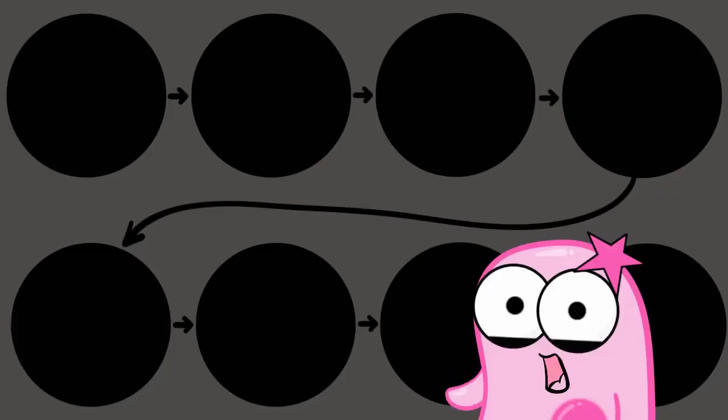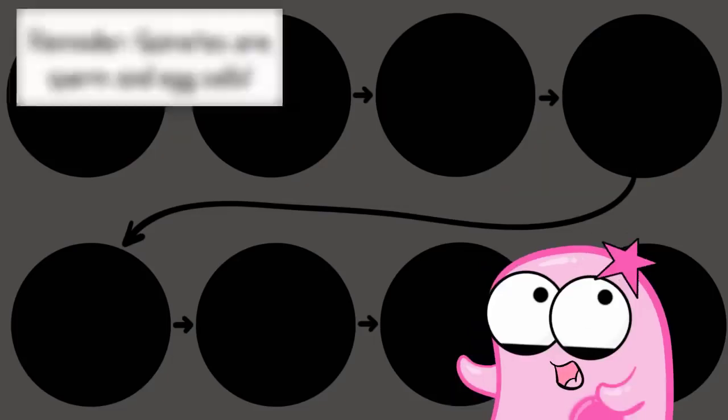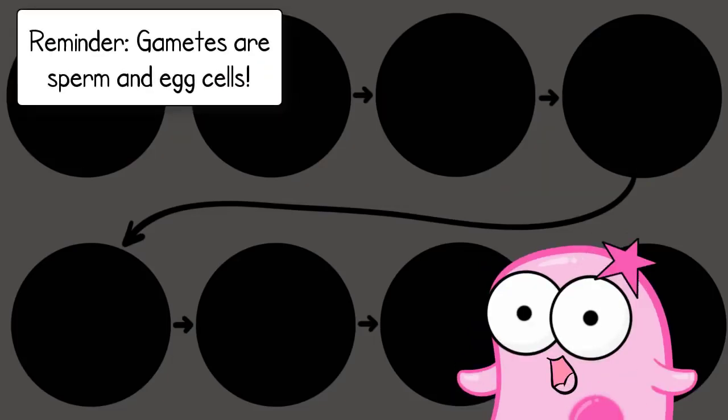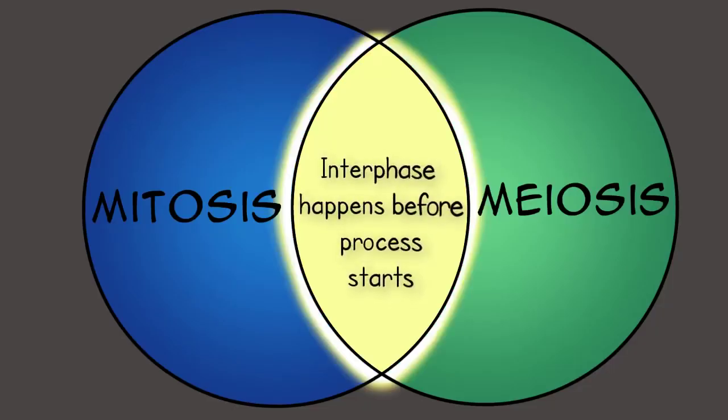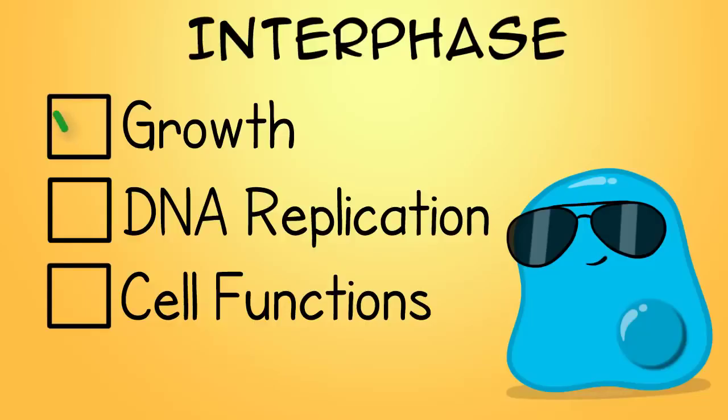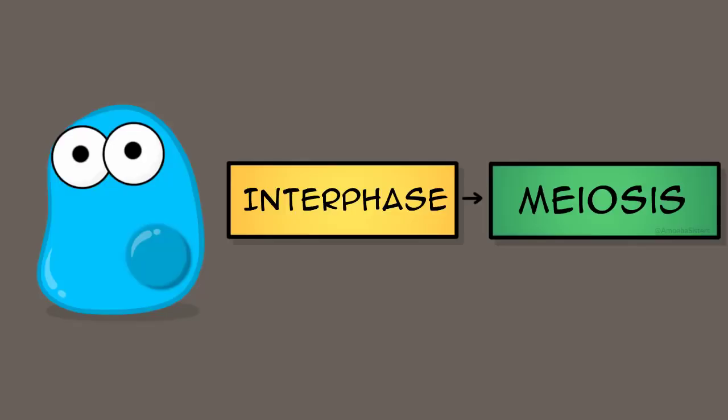Before we can start getting into the stages of meiosis to make gametes, we have to remember what happens before meiosis can even start. Actually, this also happens before mitosis. It's the stage known as interphase, and if you remember interphase, it's when the cell is growing, it's replicating its DNA, it's carrying out cell processes. And just like mitosis, interphase happens before meiosis is even going to start.